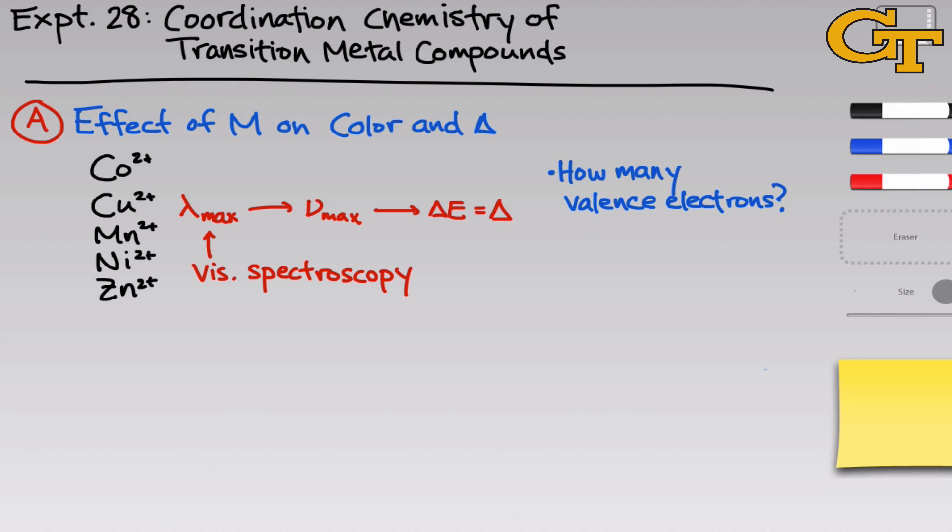And in this part of the experiment, don't pay so much attention to the wavelength itself, to the lambda max, pay more attention to whether it's colored or colorless. You'll notice an interesting relationship between the number of valence electrons present on the metal center in the complex and whether it's colored or not. And when you go to add valence electrons to that split orbital energy diagram, don't forget to account for the 2+ charge on each of these ions.